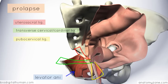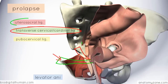So if these supporting structures are weakened, then you can get descent of the pelvic organs. The most important ones are the cardinal ligaments and the utero-sacral ligaments, as well as the levator ani muscle, which supports all the pelvic viscera and has a sort of sphincter function around them.